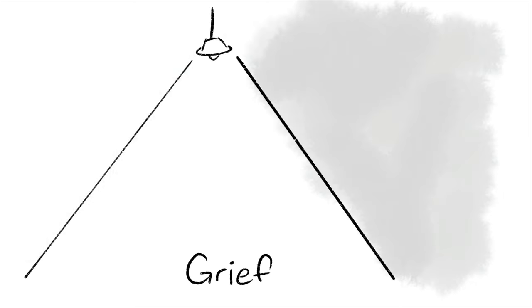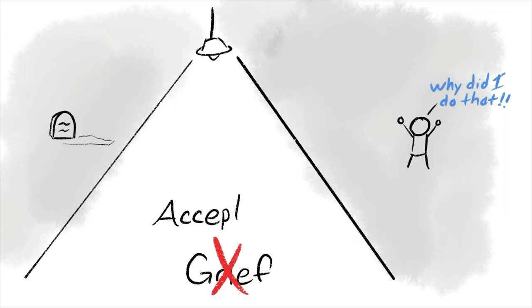Grief is characterized by the feelings of sadness and loss. The way out of grief is surrendering to the feeling and letting it be released. Then the person can move from grief to acceptance.